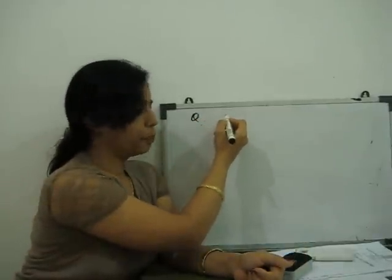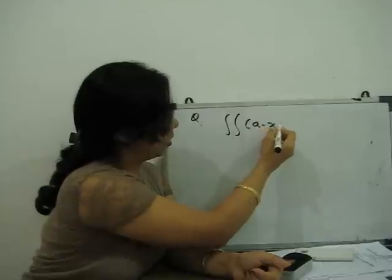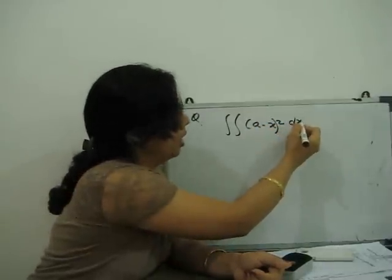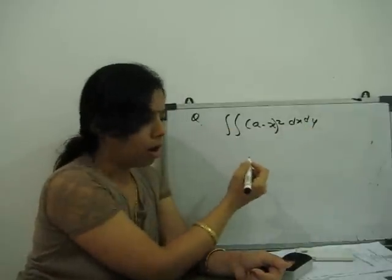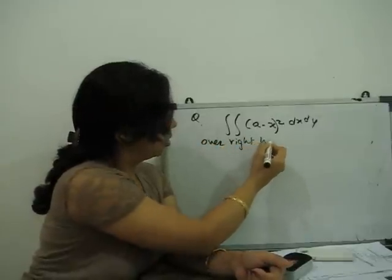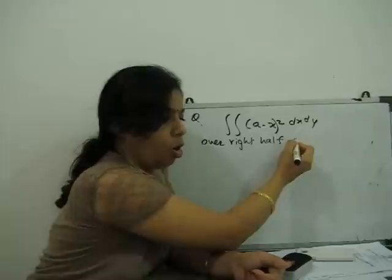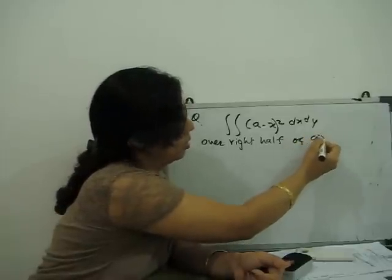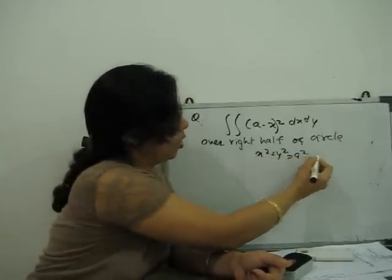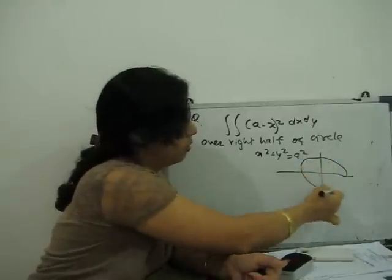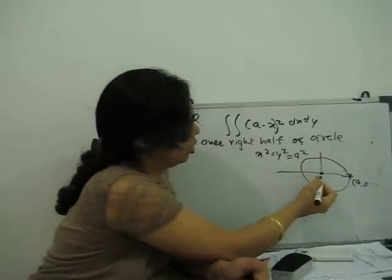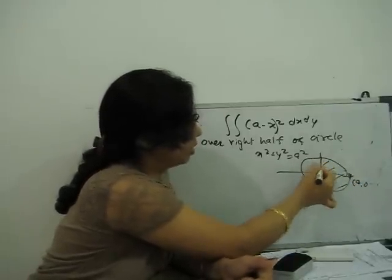Question second. If this is given: a minus x whole square dx dy over right half of the circle x square plus y square equals a square. Again, this is a circle, x square plus y square equals a square, means radius is a, center is 0, 0. Right half means this part. Clear? This we don't need. We don't go for this limit.